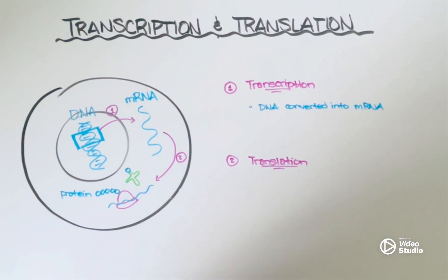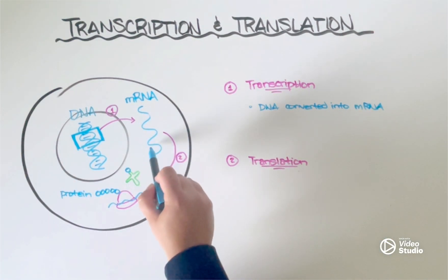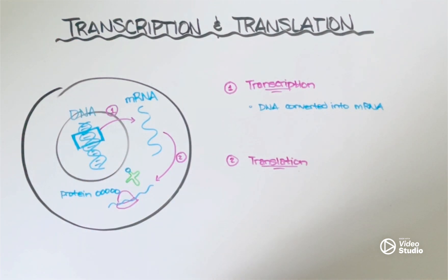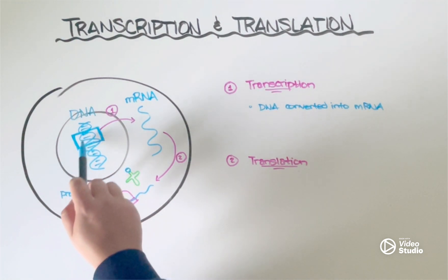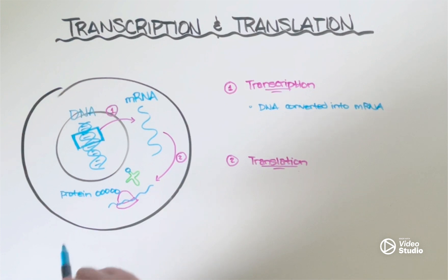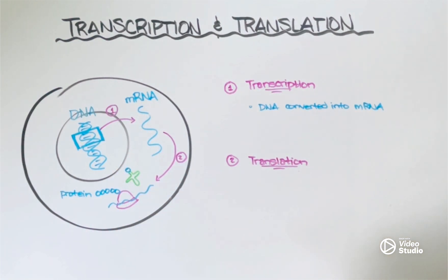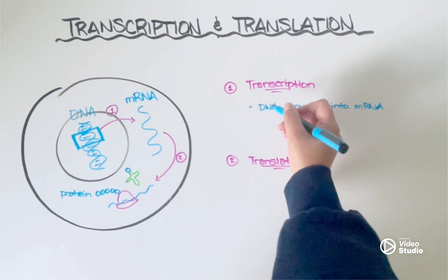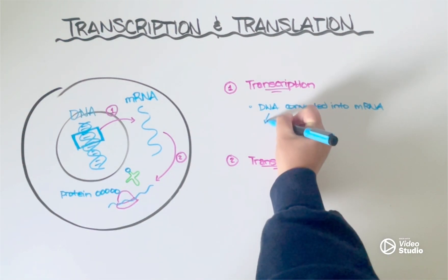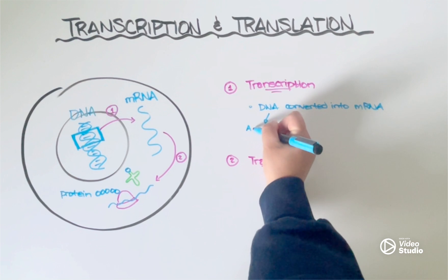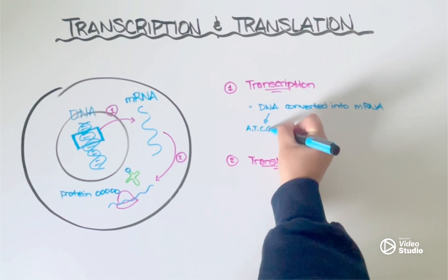Now DNA and RNA are actually very similar. As you can see, they both have this helical structure, but one obvious difference is that DNA is a double helix. So there's two strands, whereas you can see here quite clearly that mRNA is a single-stranded molecule. Another big difference between these two molecules is that while DNA contains the nitrogenous bases adenine, thymine, cytosine, and guanine...